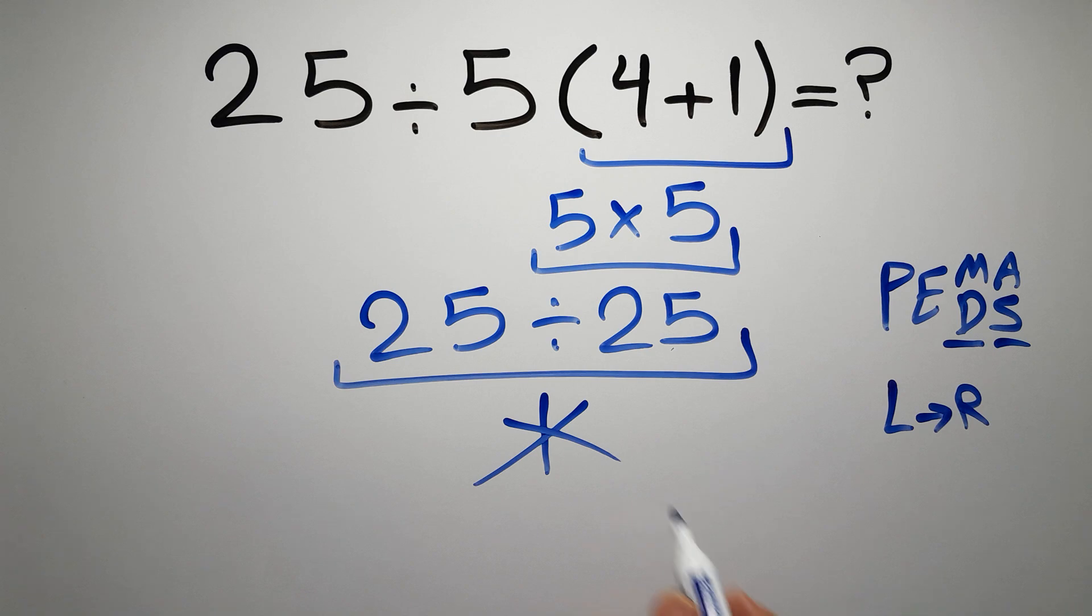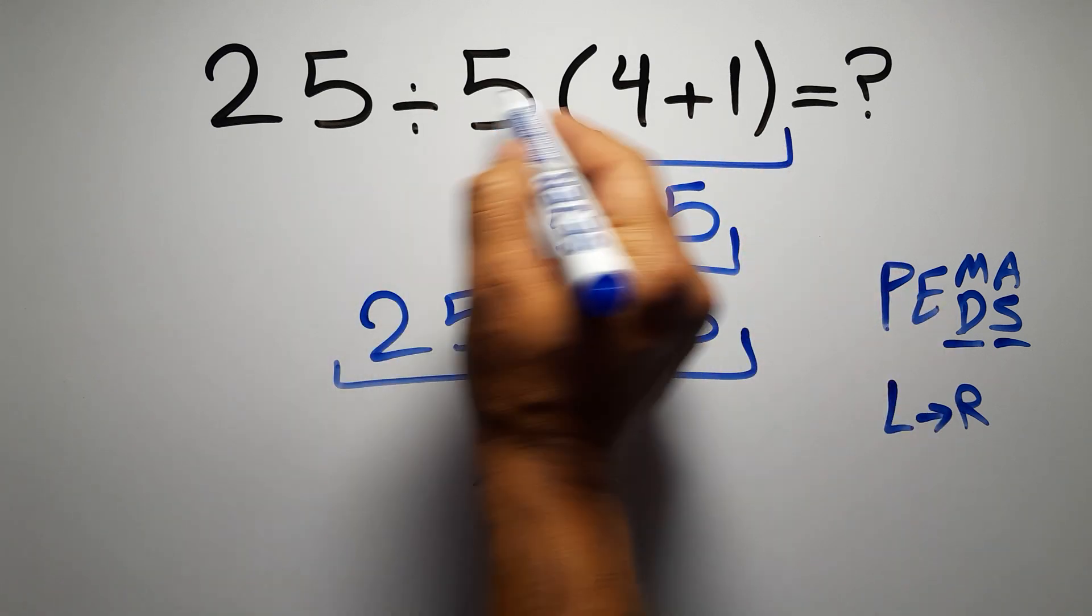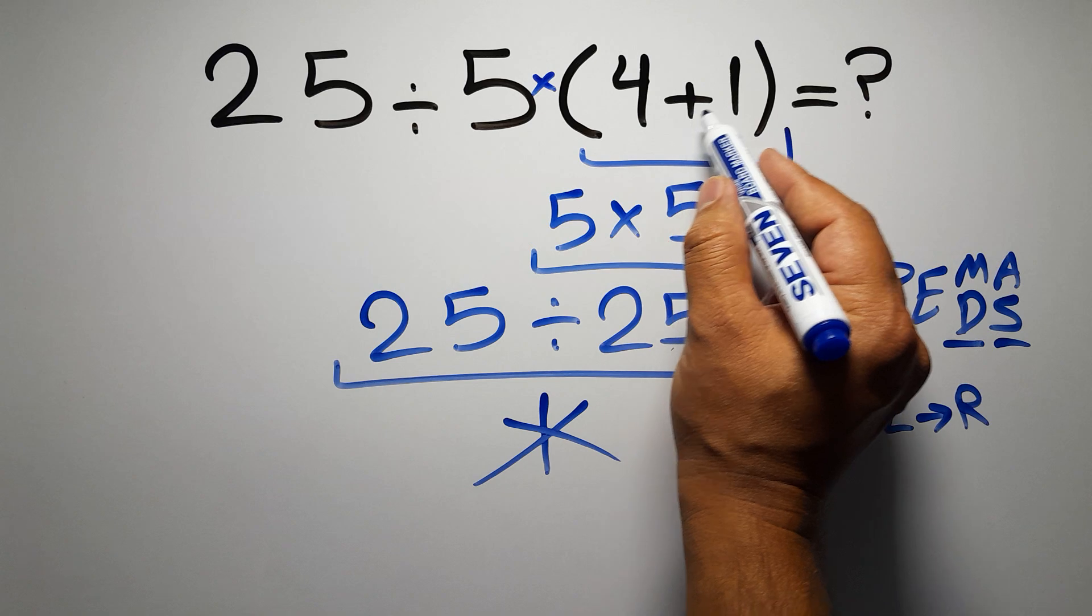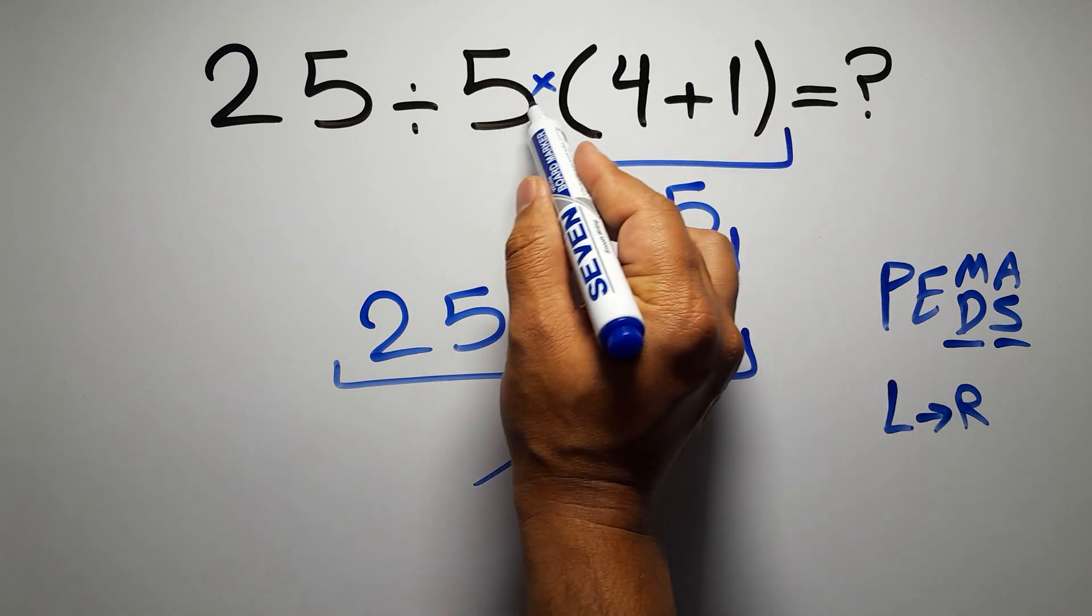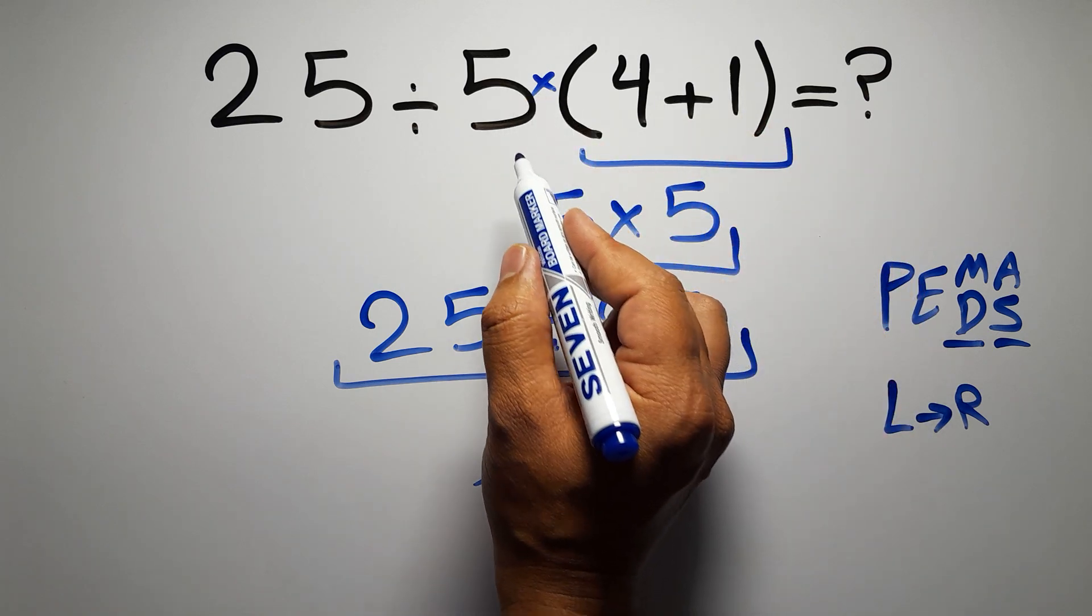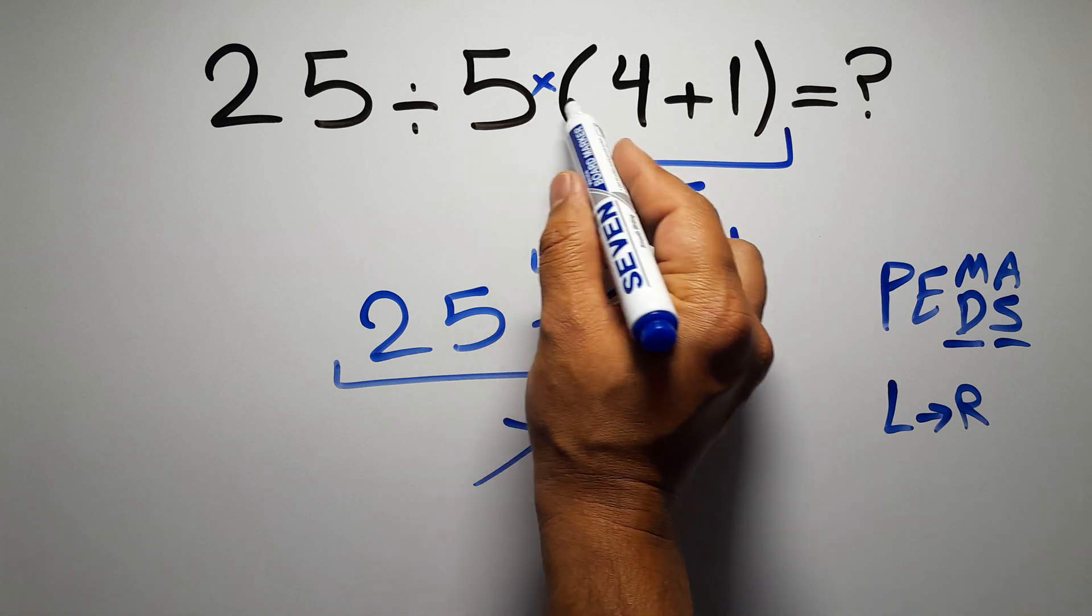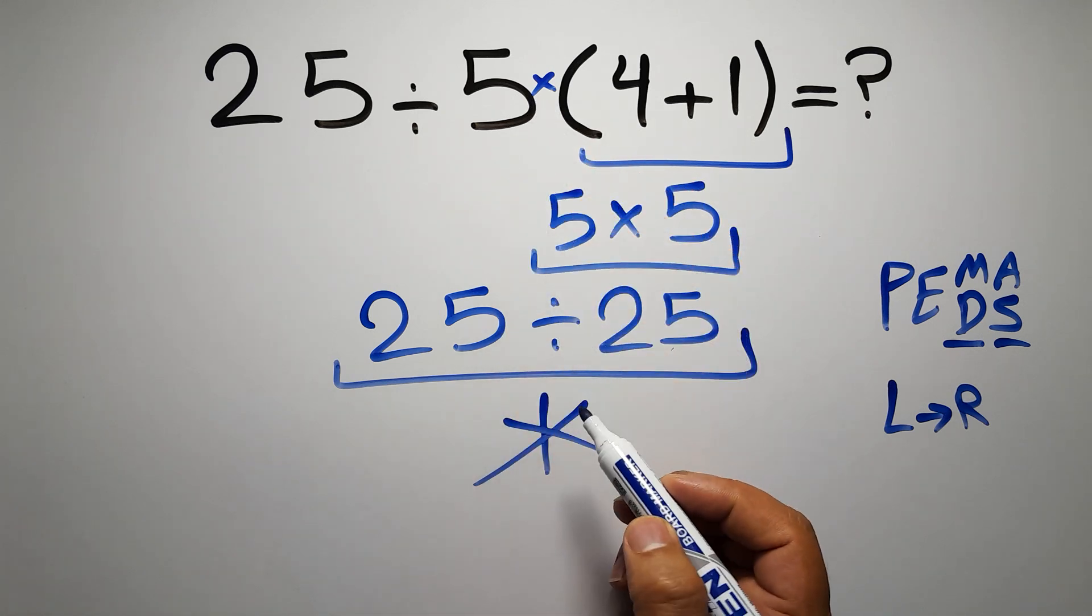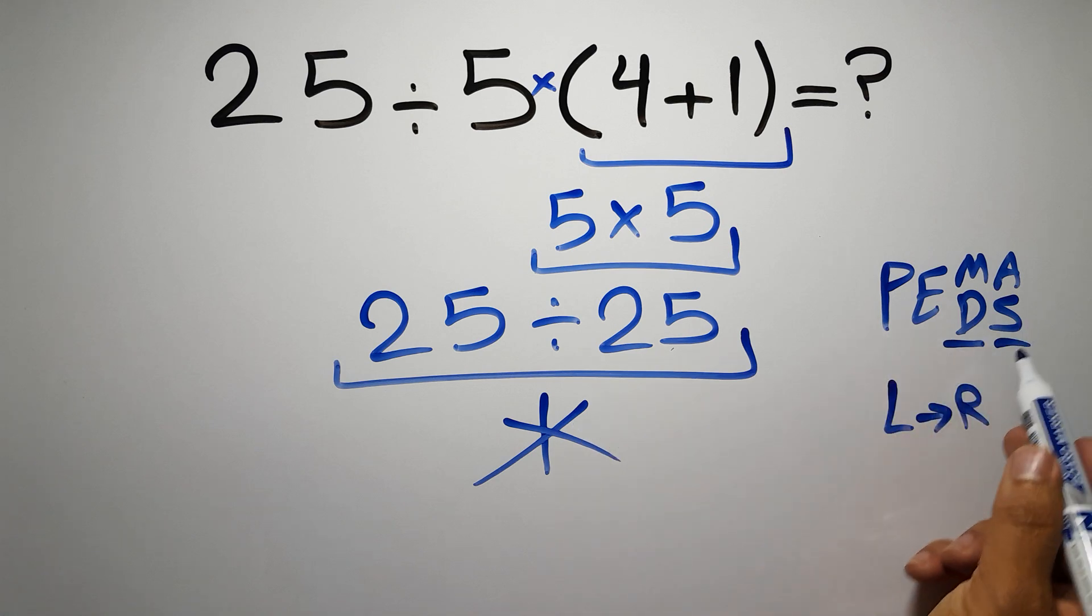In this expression we have one division, one multiplication, and one parentheses. Inside this parentheses we have one addition. Here we have a multiplication because in mathematics when a number is placed next to parentheses it means multiplication, and we usually don't write the multiplication sign for brevity.